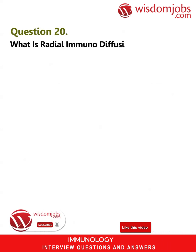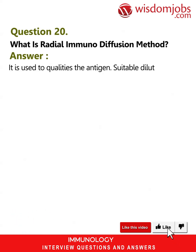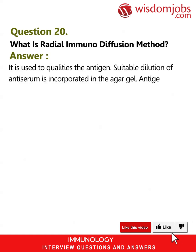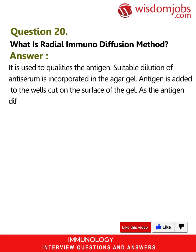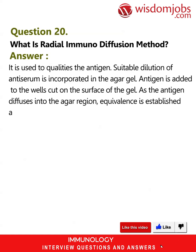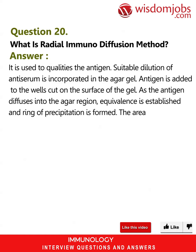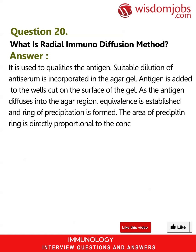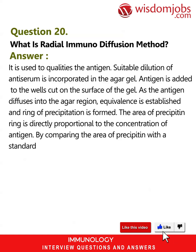Question 20: What is the radial immunodiffusion method? Answer: It is used to quantify the antigen. A suitable dilution of antiserum is incorporated in the agar gel. Antigen is added to the wells cut on the surface of the gel. As the antigen diffuses into the agar, the region of equivalence is established and a ring of precipitation is formed. The area of the precipitin ring is directly proportional to the concentration of antigen.